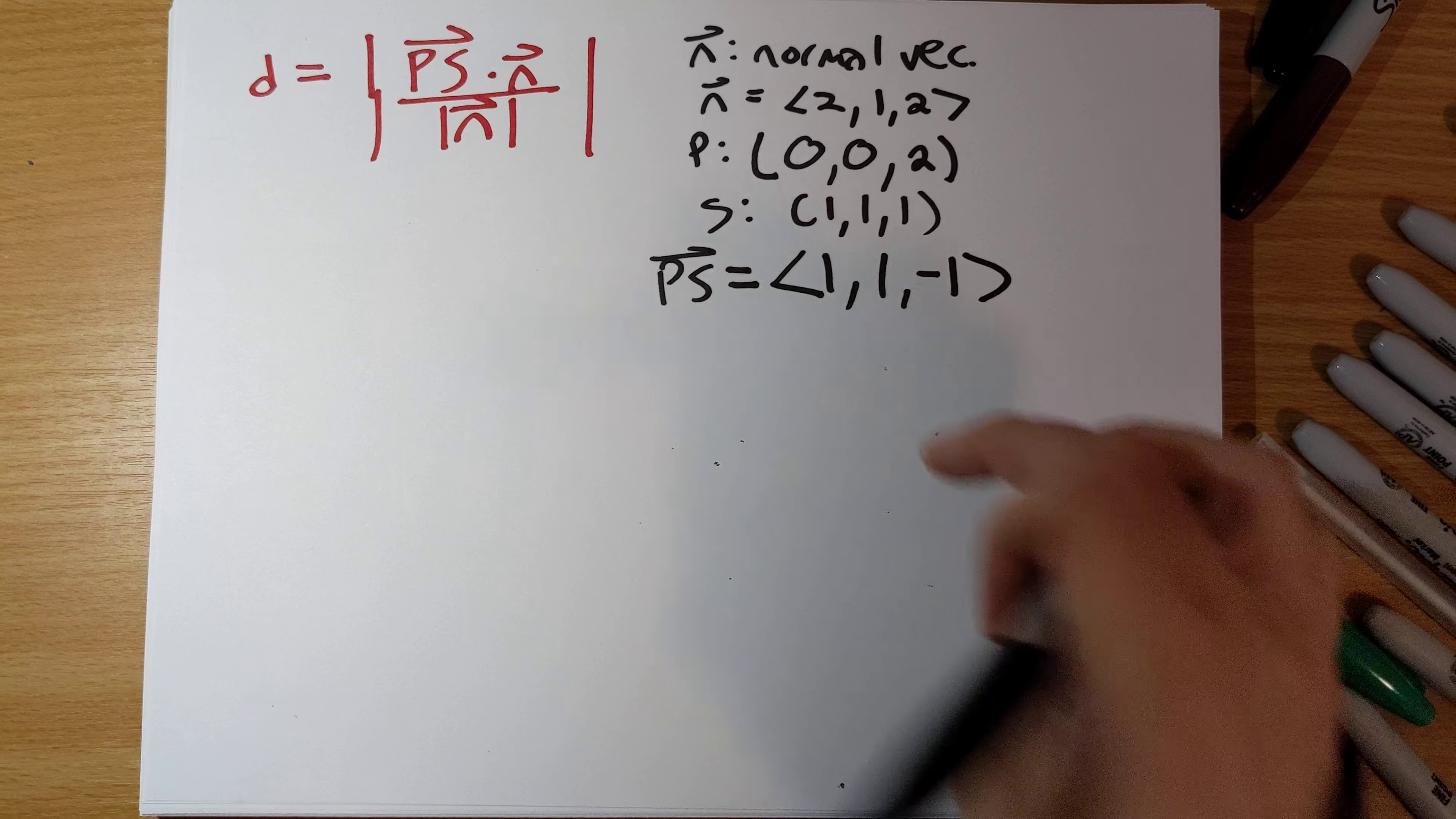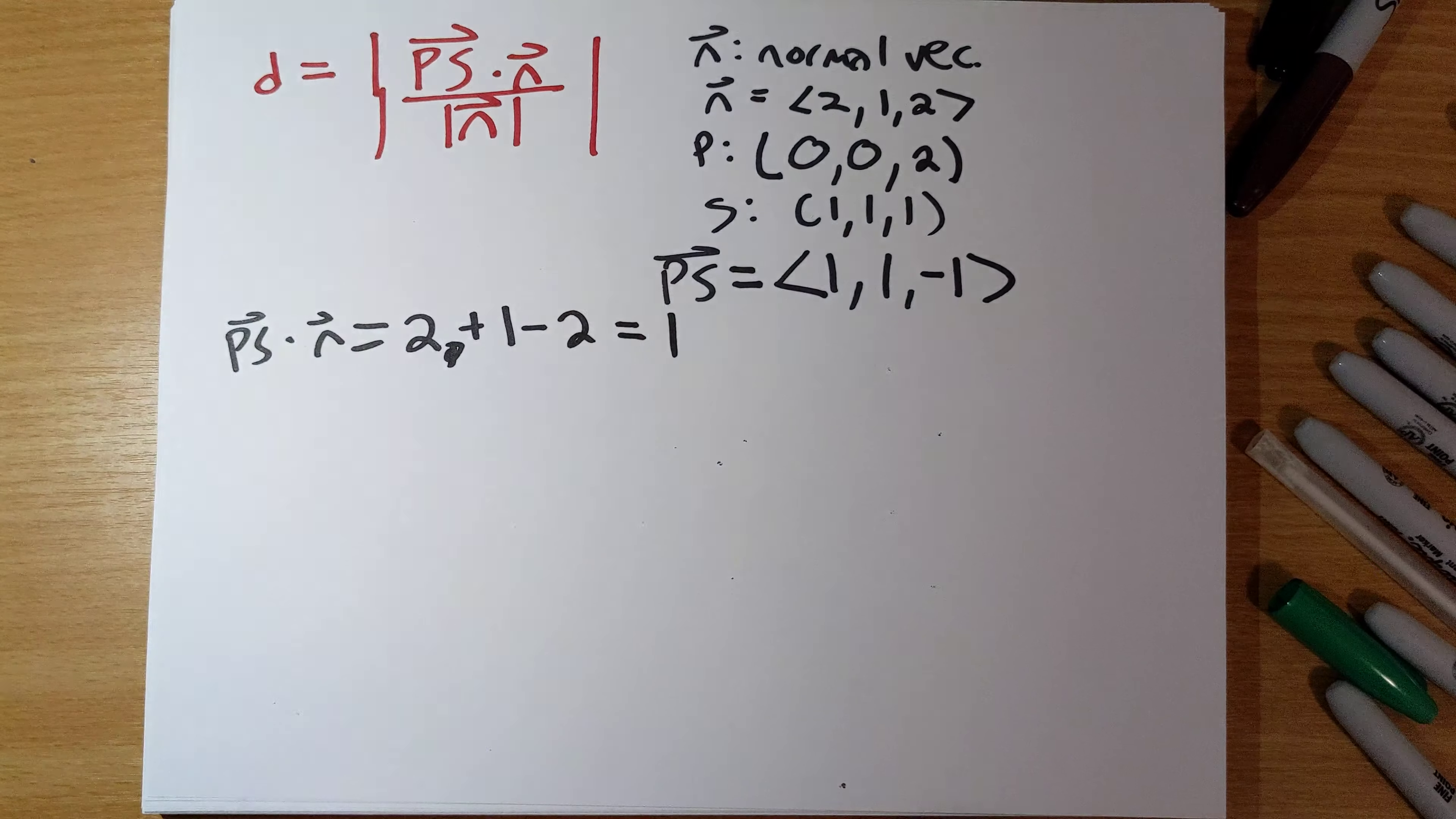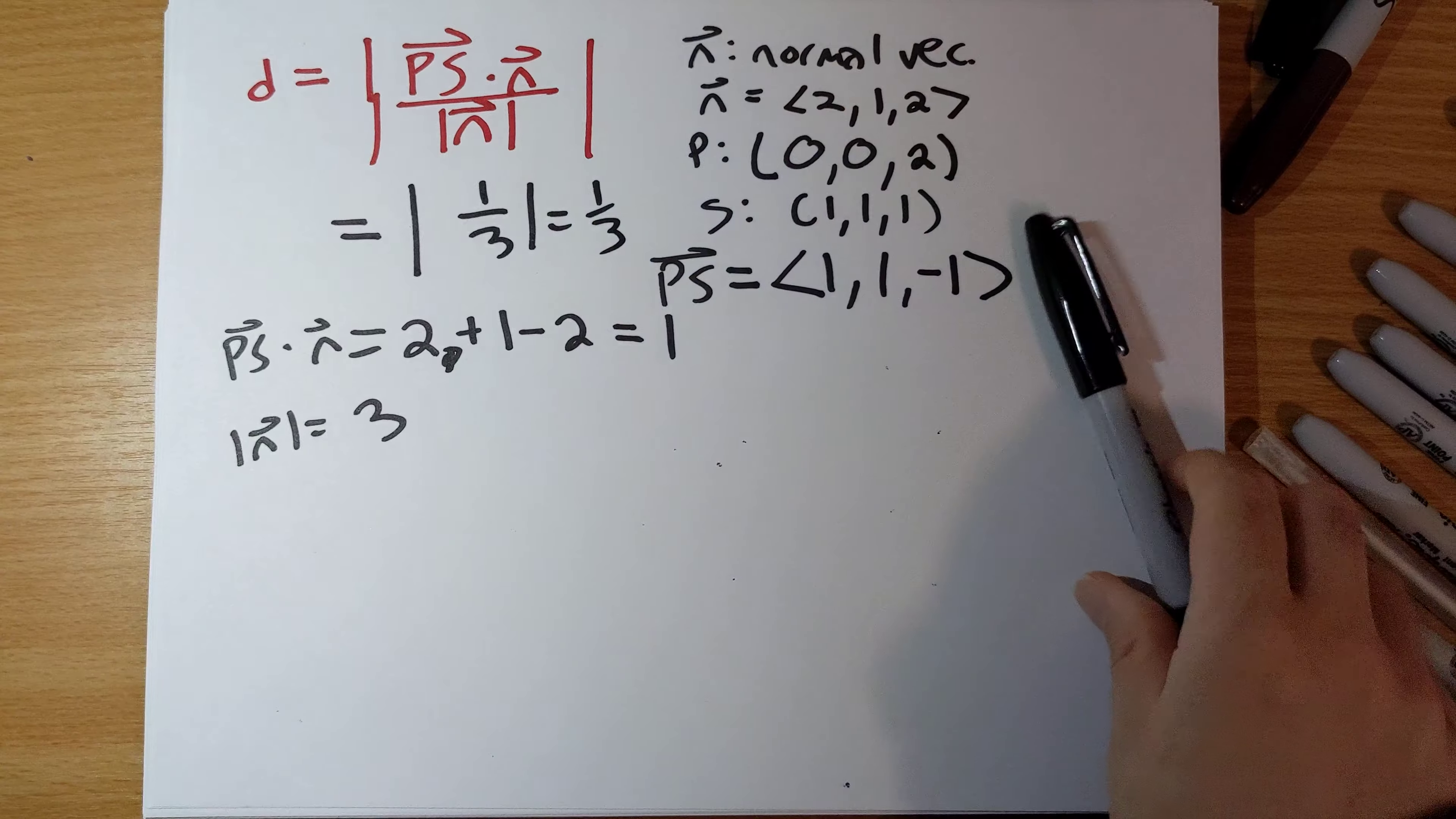Okay, so now we need the dot product here. I have PS dot with n. And so that's going to be 2 plus 1 minus 2 is 1, and the magnitude of n is going to be 3. And so our final answer is the absolute value of 1 over 3, which is just one-third.